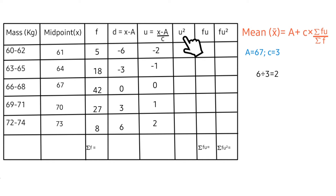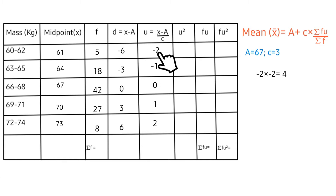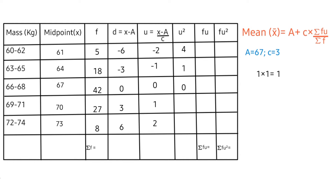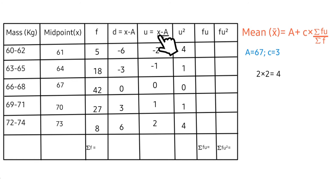Now let's proceed to the u² column. u² means u squared: minus 2 squared gives 4. Next is minus 1 squared, then 0 squared, then 1 squared, and lastly 2 squared gives 4. Now let's proceed to the fu column. fu simply entails frequency times u.